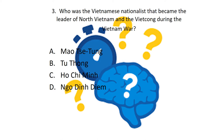Question three: who was the Vietnamese nationalist that became the leader of North Vietnam and the Viet Cong during the Vietnam War? Was it Mao, Tu Tong, Ho Chi Minh, or Ngo Dinh Diem? The leader of North Vietnam and the Viet Cong was Ho Chi Minh, who we'll find out more about.